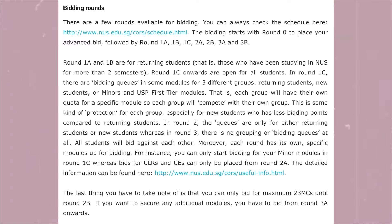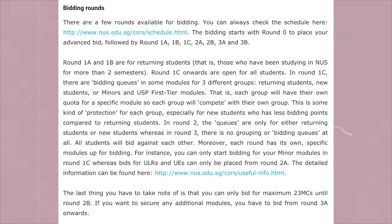Round 1C onwards is open for all students. In Round 1C, there are bidding queues in some modules for three different groups: returning students, new students, and minors and USP first-tier modules — each group has their own quota and competes within their own group. This provides protection especially for new students who have fewer bidding points than returning students. In Round 2, the queues are only for either returning students or new students, whereas in Round 3 there is no grouping at all — all students bid against each other.